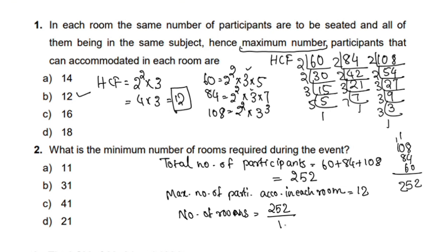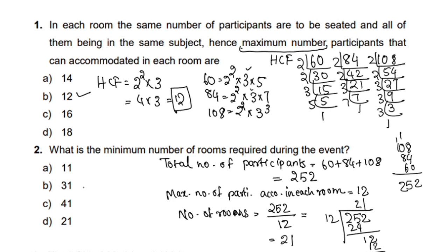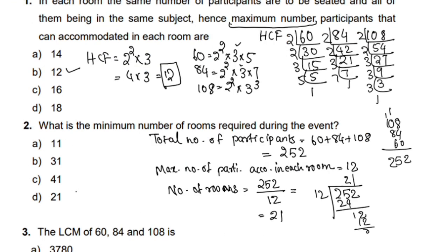That is 12. 252 divided by 12 — 12 twos are 24, 12 ones are 12, 12 times 1 equals 21. So the answer is option D.